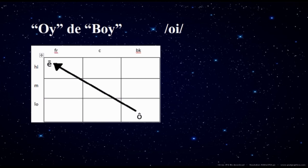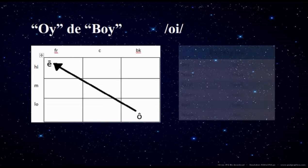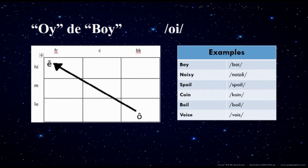The second is OI as in 'boy'. It involves movement from the position of open O — low back — to the position of long I, high front. It sounds like 'oi'. Examples: boy, noisy, spoil, coin.